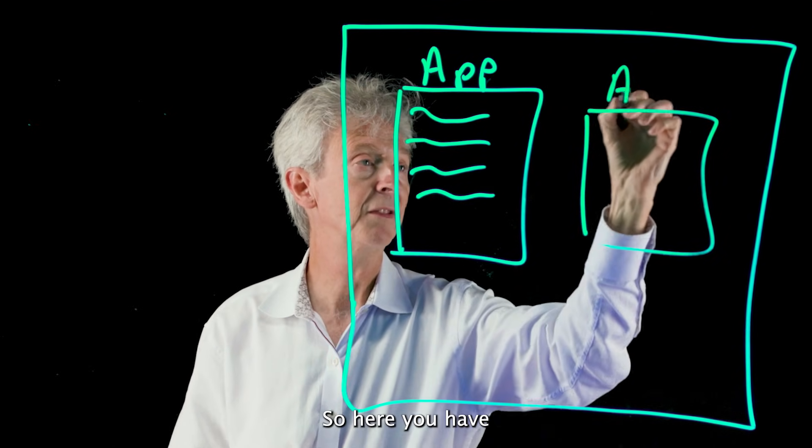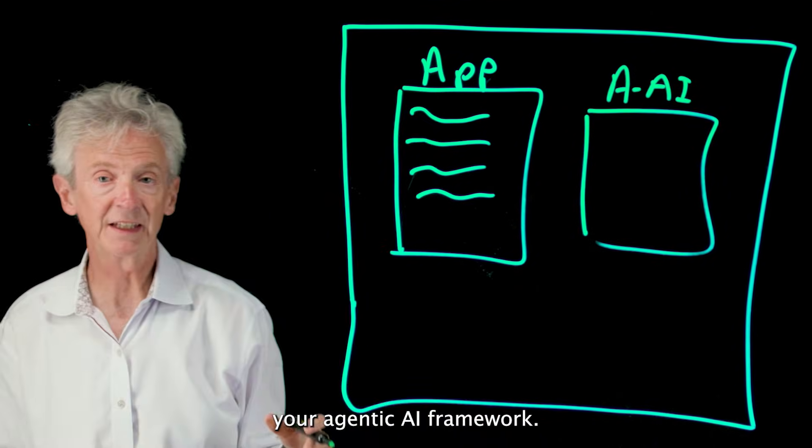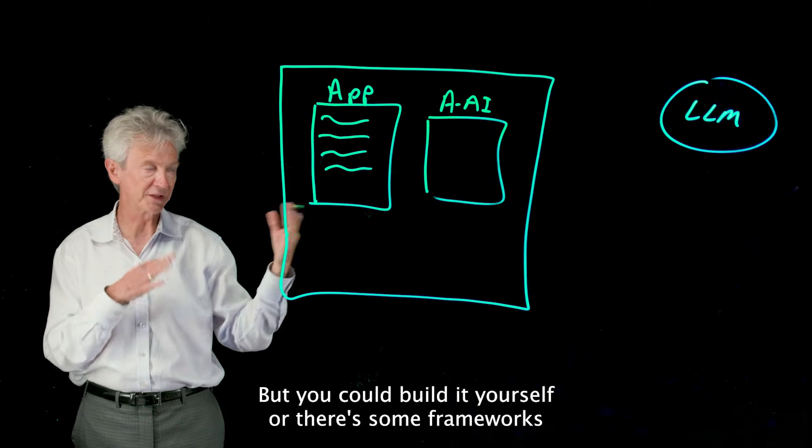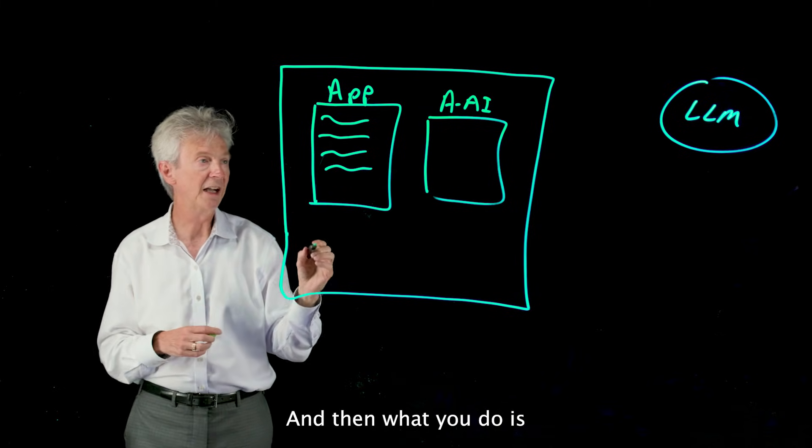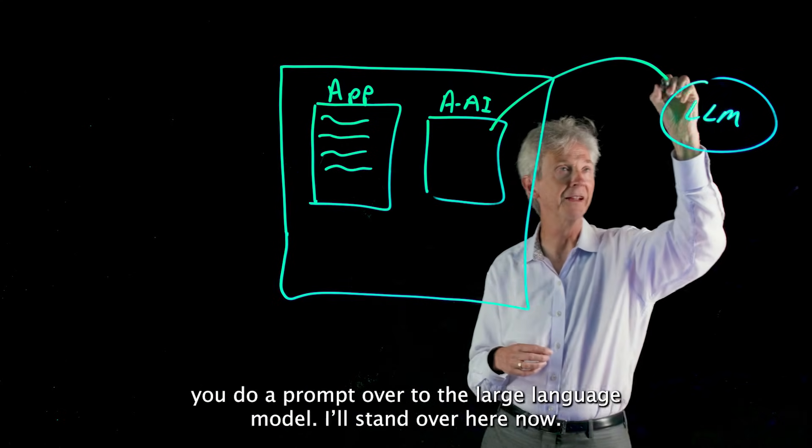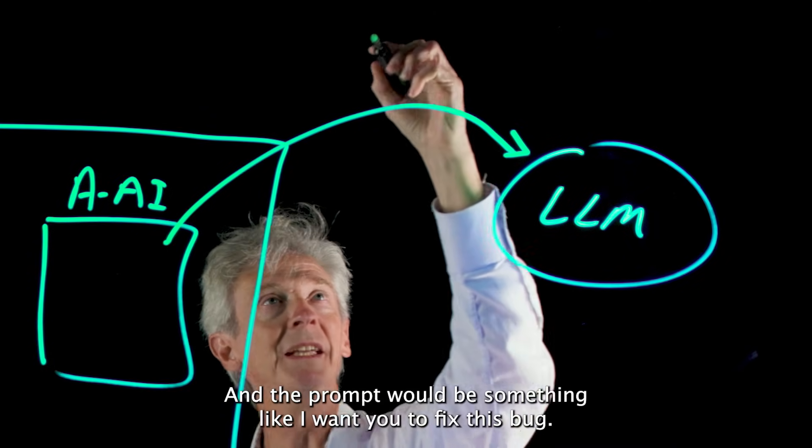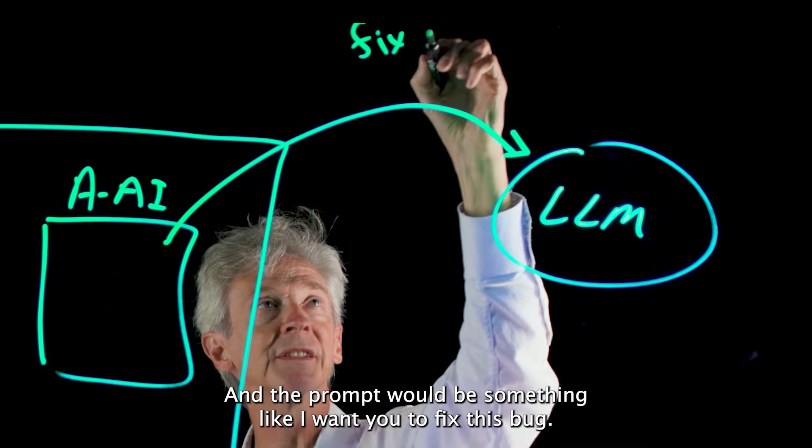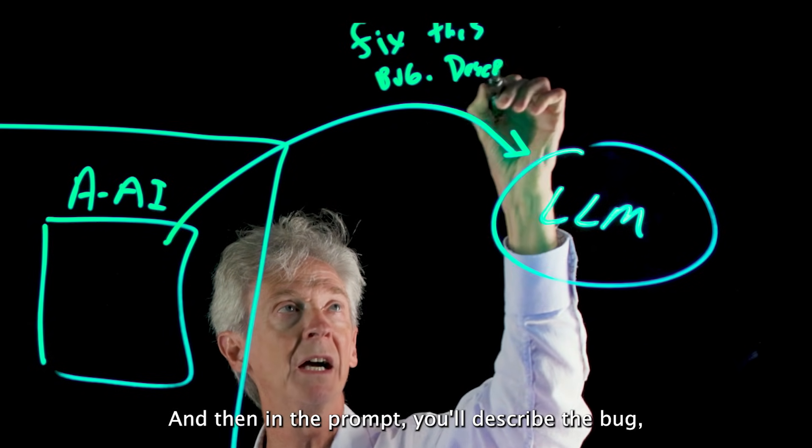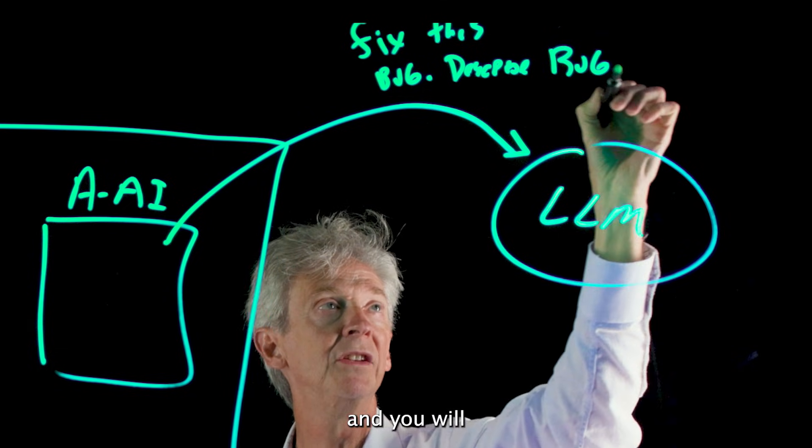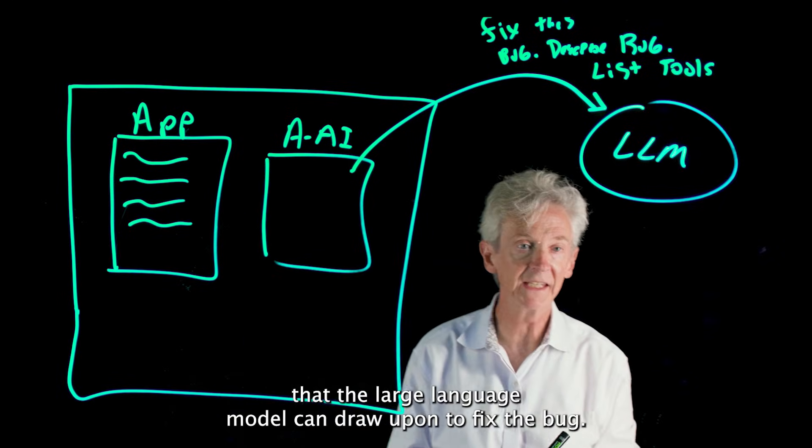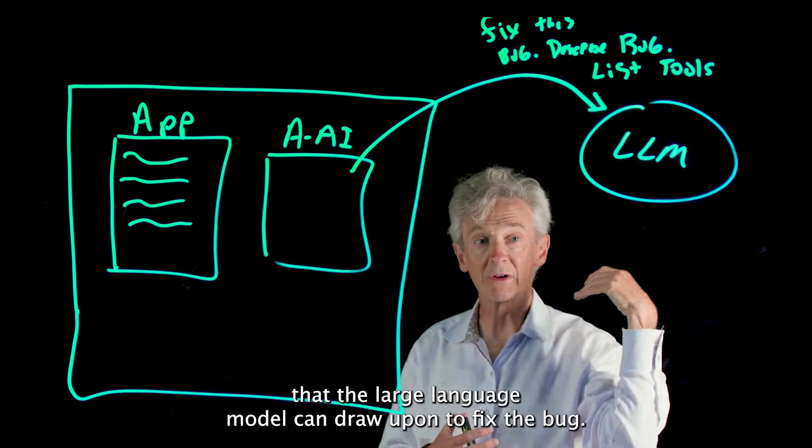So here you have your agentic AI framework—you could build it yourself or there's some frameworks—but this orchestrates this whole workflow. And then what you do is you do a prompt over to the large language model over here. Now, the prompt would be something like, 'I want you to fix this bug.' And then in the prompt you'll describe the bug.